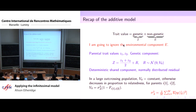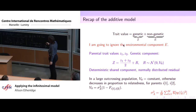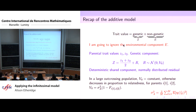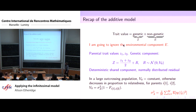In the additive case, the trait value of an offspring, ignoring the environmental component, is the mean trait value of the parents plus a residual which is normally distributed with mean zero, and a variance determined by the variance in the base population and the probability of identity of the two parents. If we're in a very large outcrossing population, we can assume the probability of identity is zero and everything's very simple — the variance remains constant.